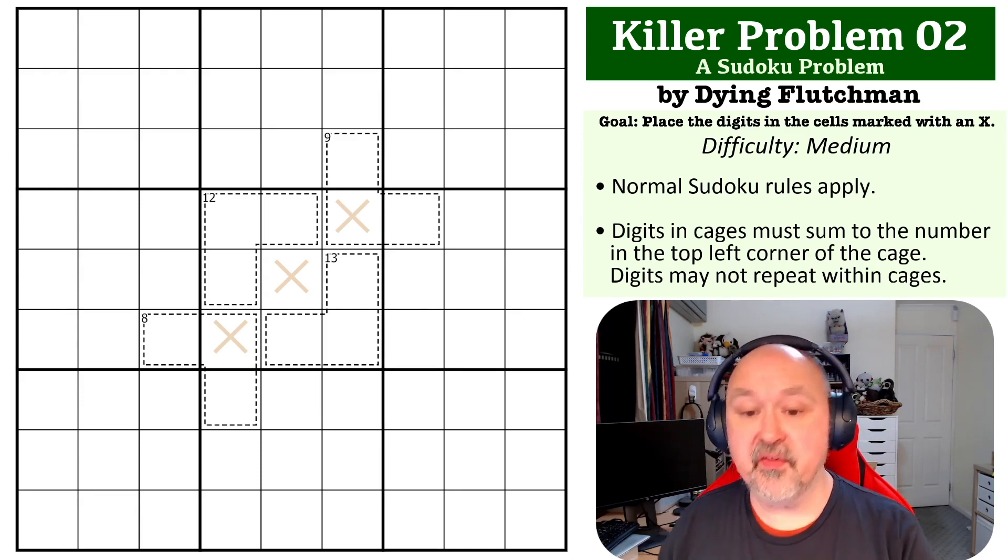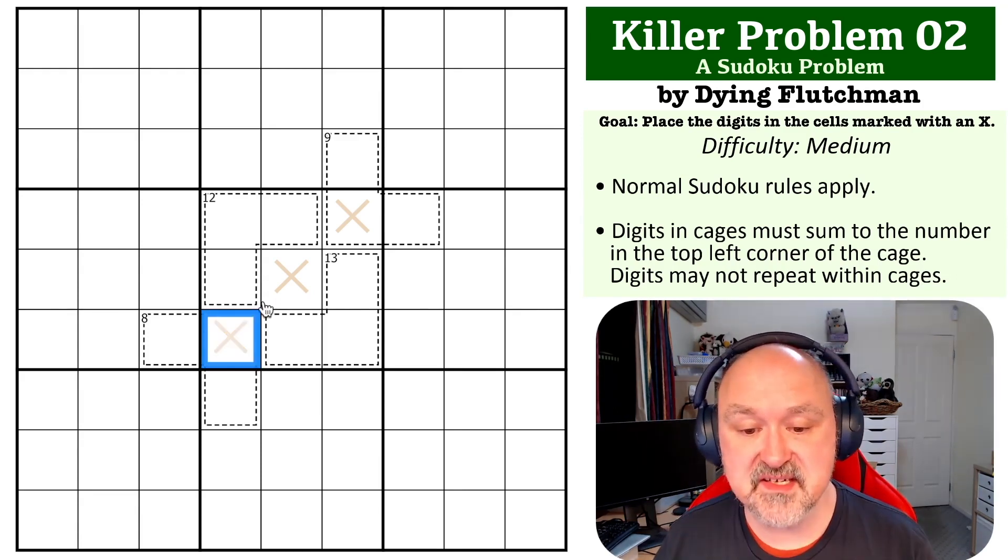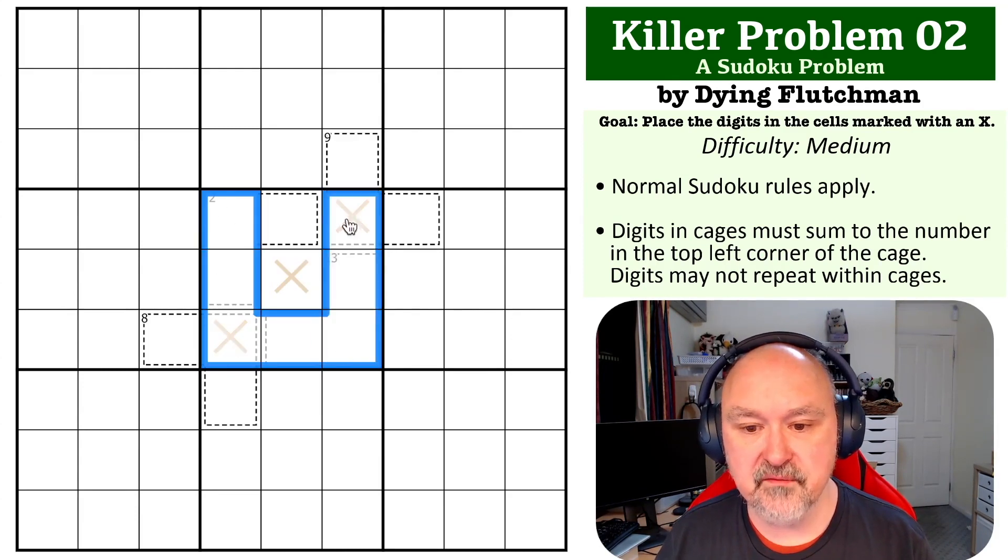Okay, so on this puzzle, yeah the goal is to get these three digits and there's a couple of tricks you need to do for this one. So the first one is all involved around box five and understanding what the total of these three cells is.